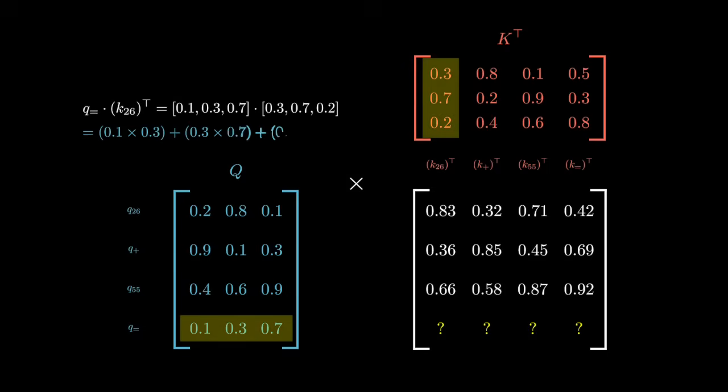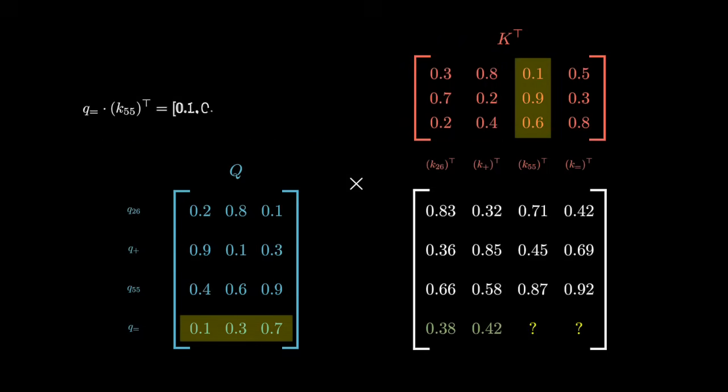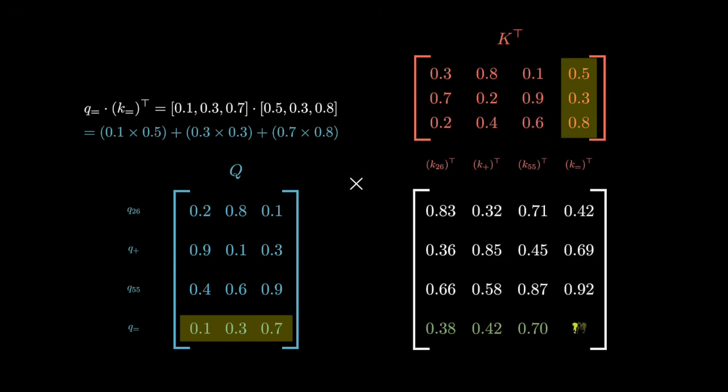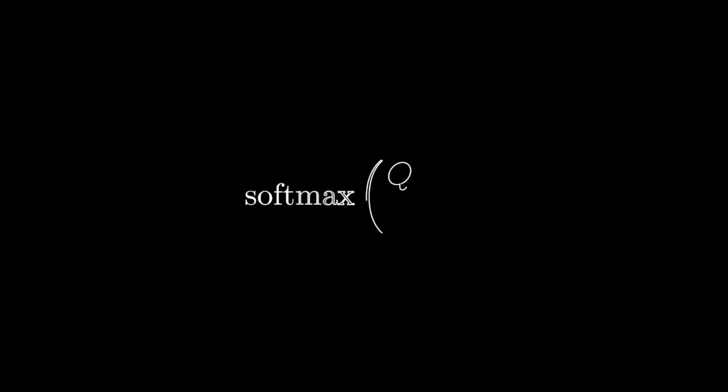For example, when processing the equal sign token, its query vector compares with the keys for all four tokens. However, raw dot product values grow with the dimensions of the key and query vectors, so we divide them by the square root of dk to keep the values in a stable range before softmax.